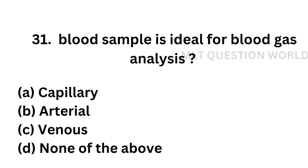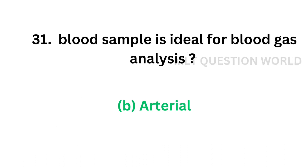Question number 31: Which blood sample is ideal for blood gas analysis? Option A: capillary, option B: arterial, option C: venous, option D: none of the above. The correct answer is option B, arterial. Arterial blood sample is ideal for blood gas analysis.